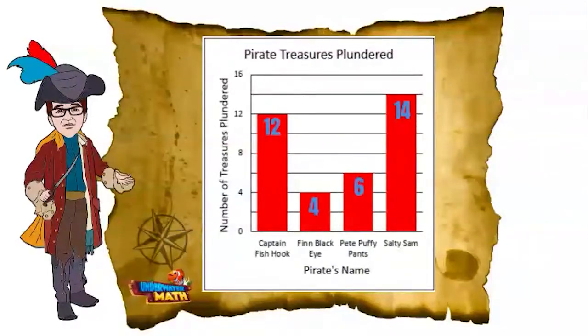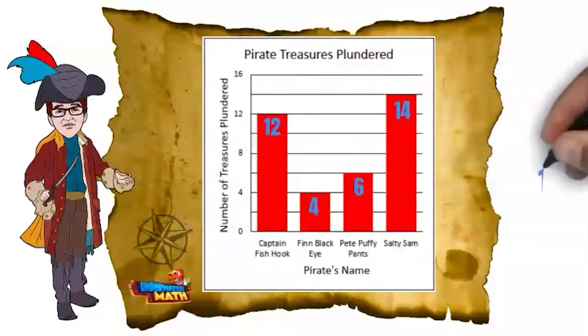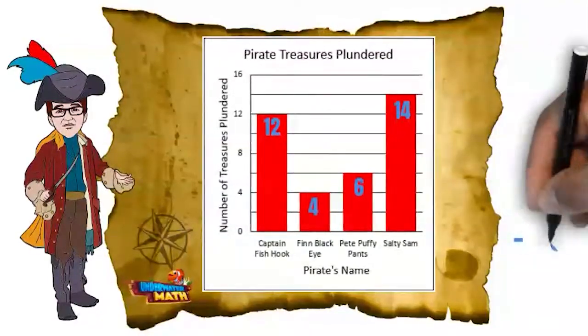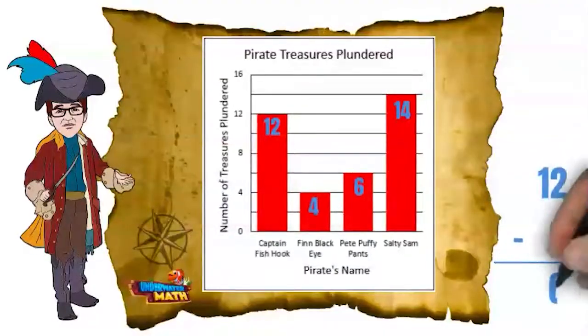How much more treasure did I plunder than Pete Puffy Pants? We'll subtract the amount on Pete's bar from the amount on my bar. 12 minus 6 equals 6.